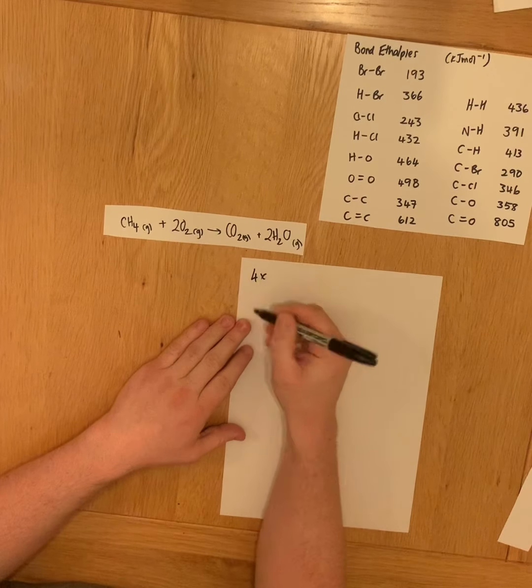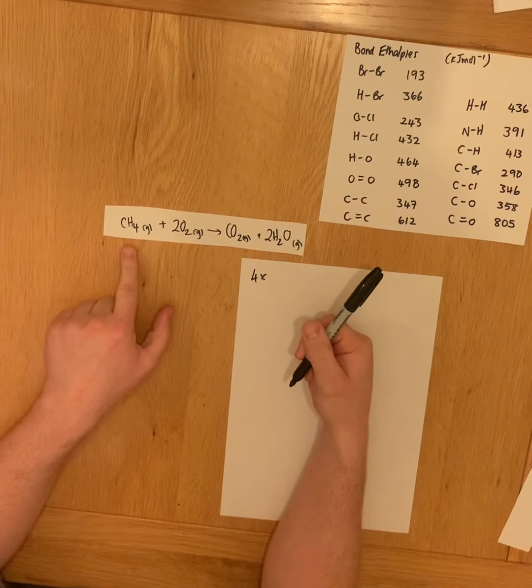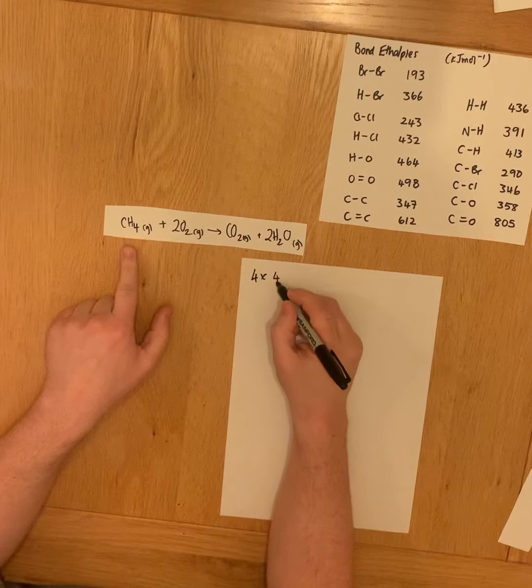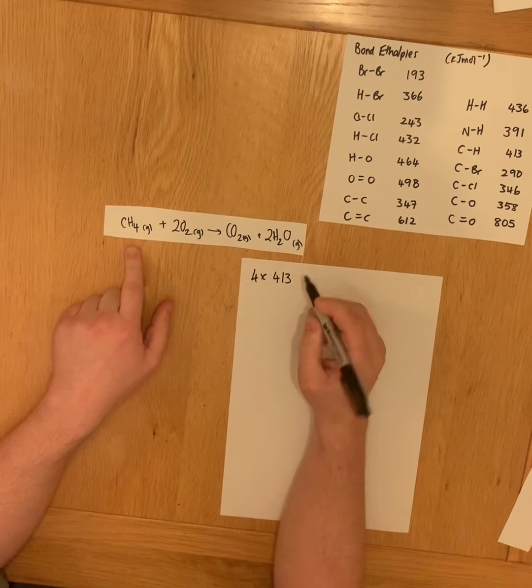So you have four C-H bonds in methane, so that's four moles of C-H bonds you need to break.